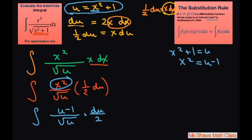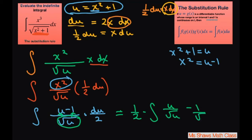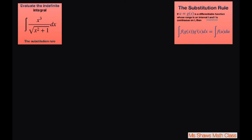Simplifying further, we pull out the 1 half and split the fraction, writing the square root of u under each term. So it becomes 1 half times the integral of u over square root of u minus 1 over square root of u. Then we rewrite the radicals as rational exponents: u divided by square root of u is u to the 1 half, and 1 divided by square root of u is u to the negative 1 half.